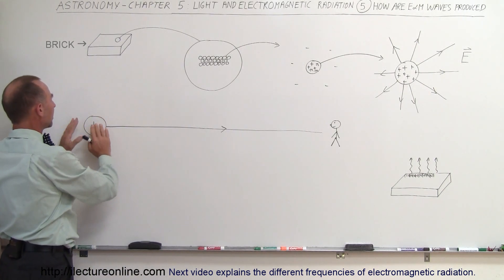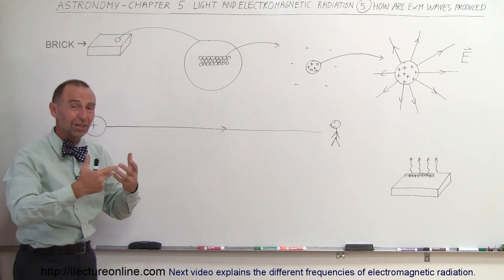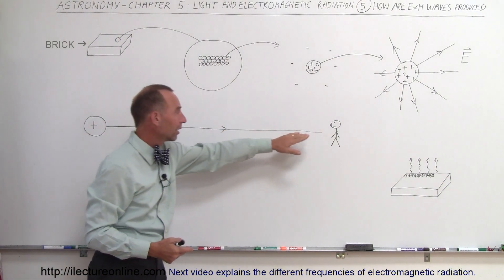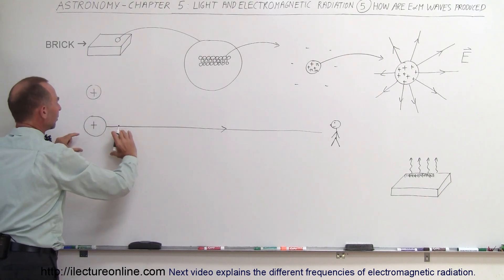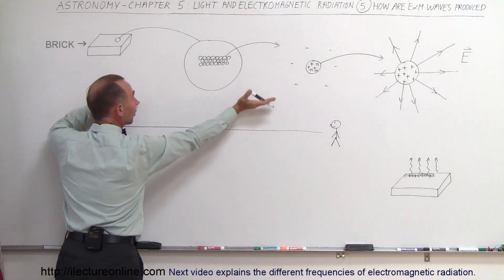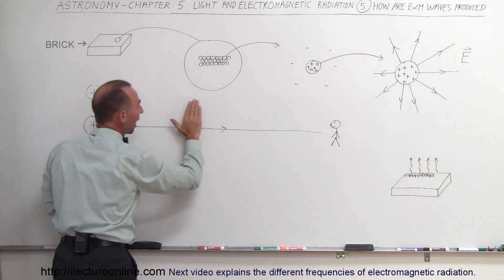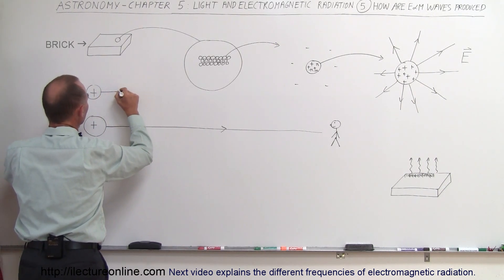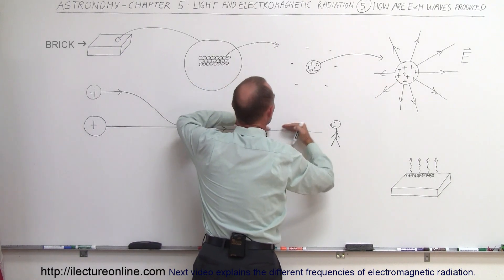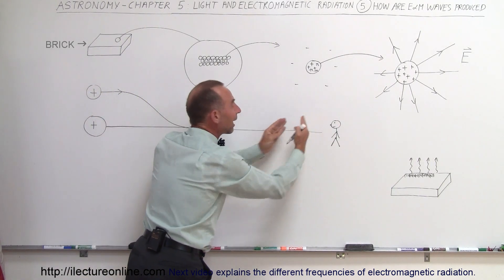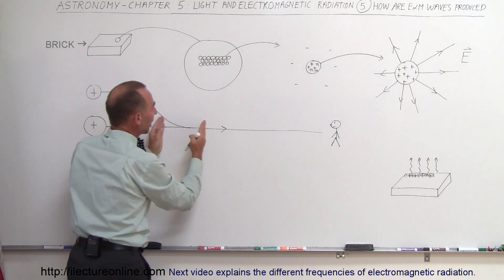Imagine we have a charged object with an electric field all around it, and we look at one electric field line going out to an observer. The observer can see there's an electric field line there — an influence of this charge at that location. What happens if we take this object and move it upward? The field moves up with it, but does the entire field move up at the same time? It doesn't. As we move it up, the influence moves outward at the speed of light. It takes a while before this effect is felt downrange, because there's a finite limit to the speed of light.